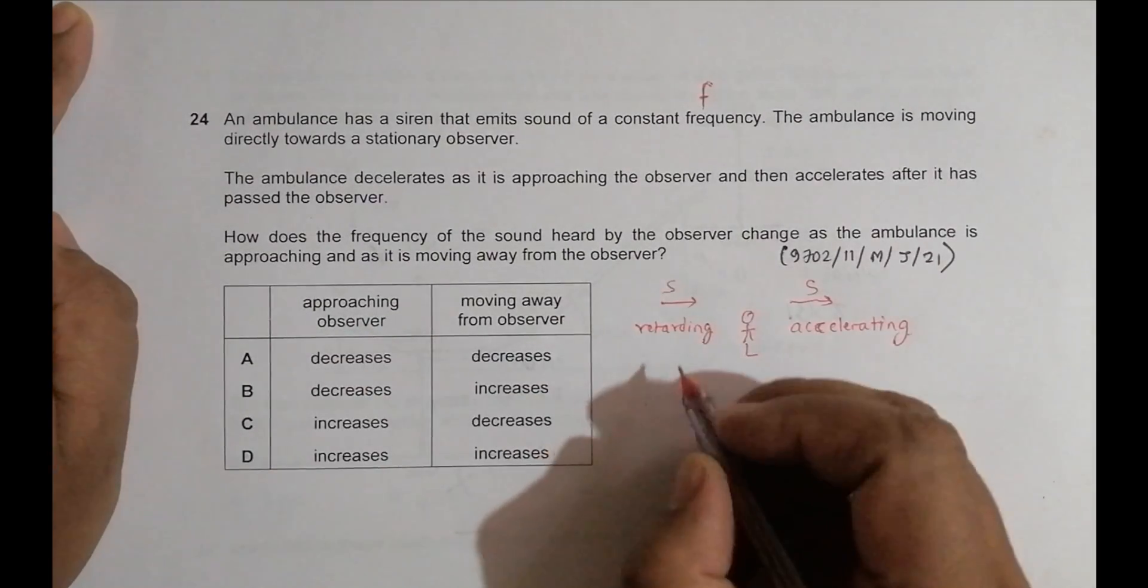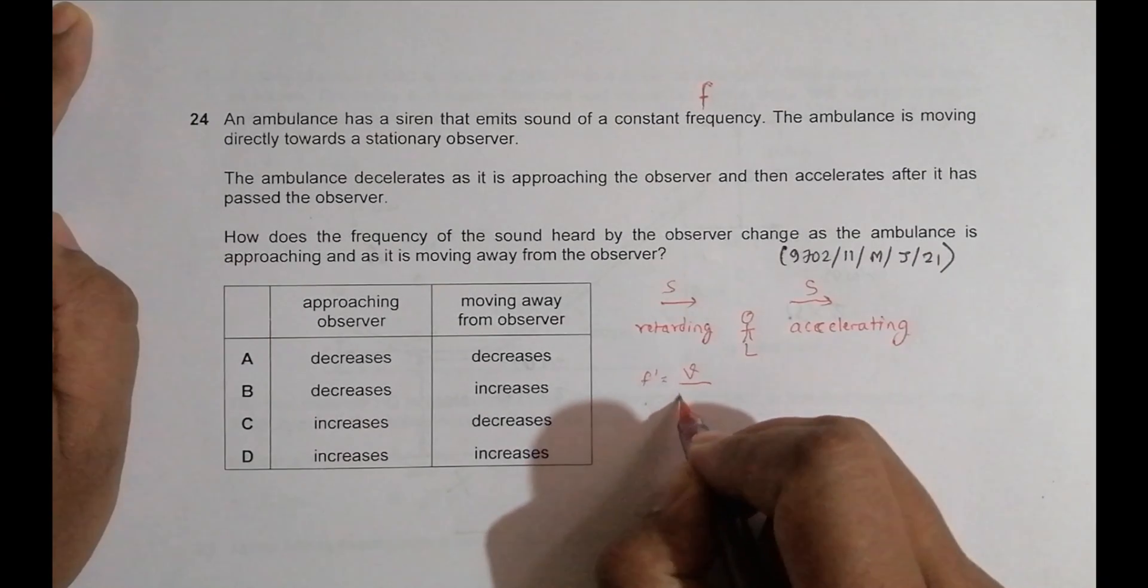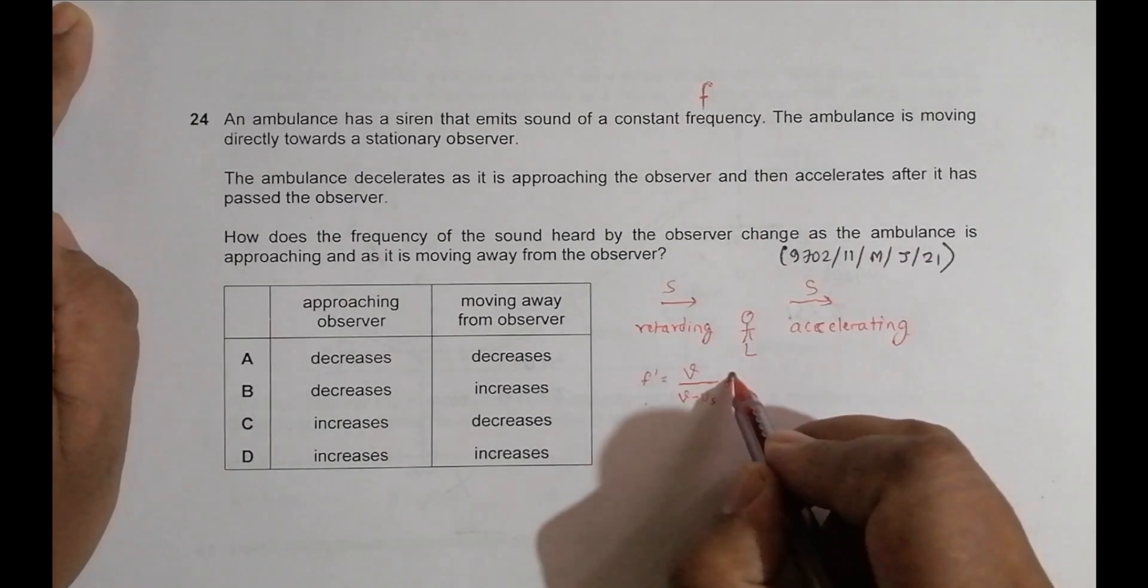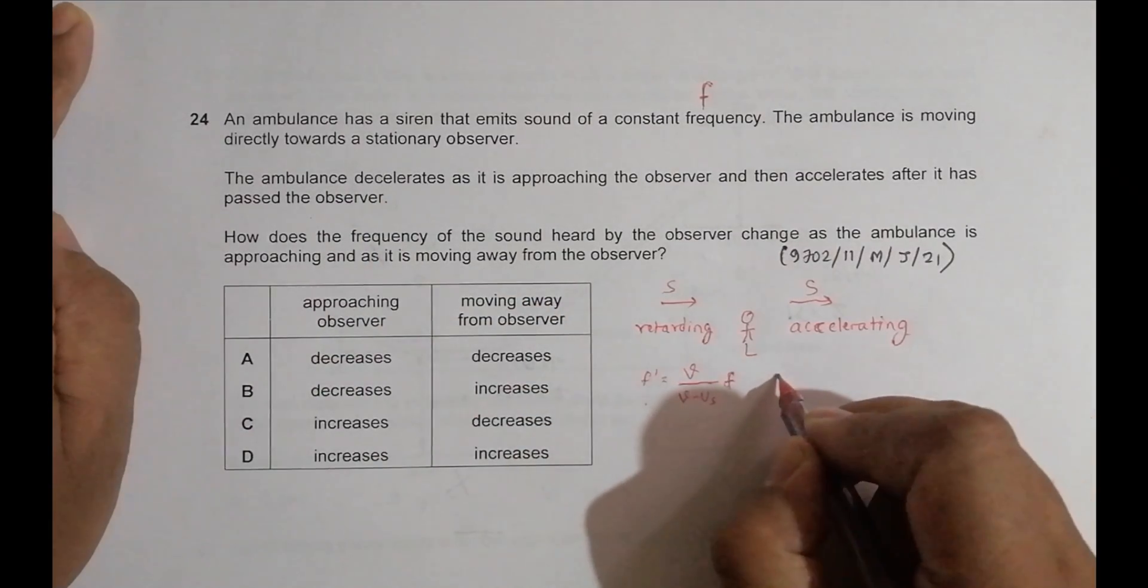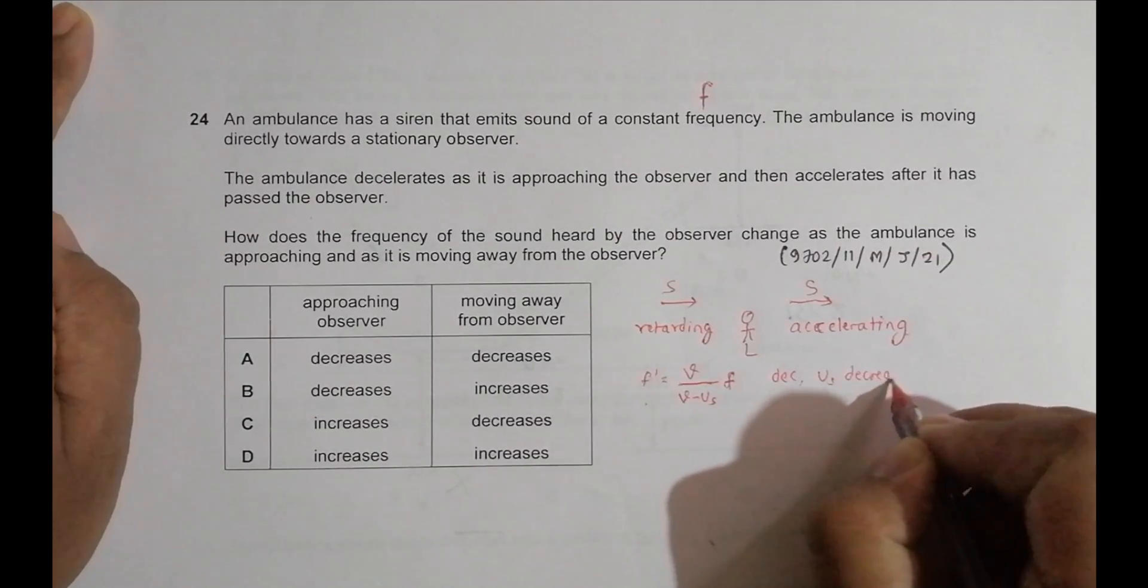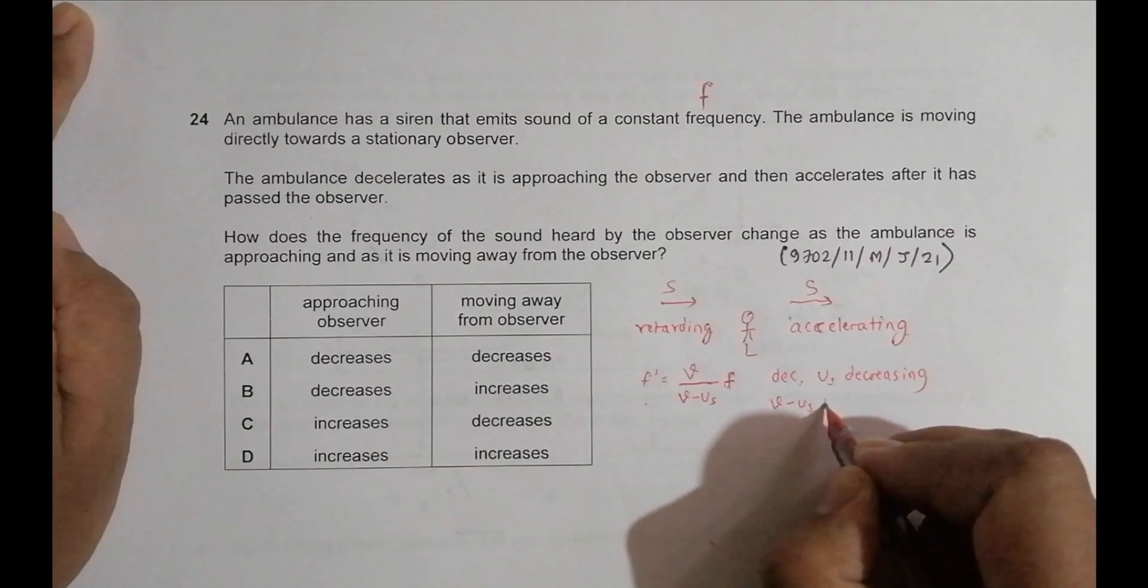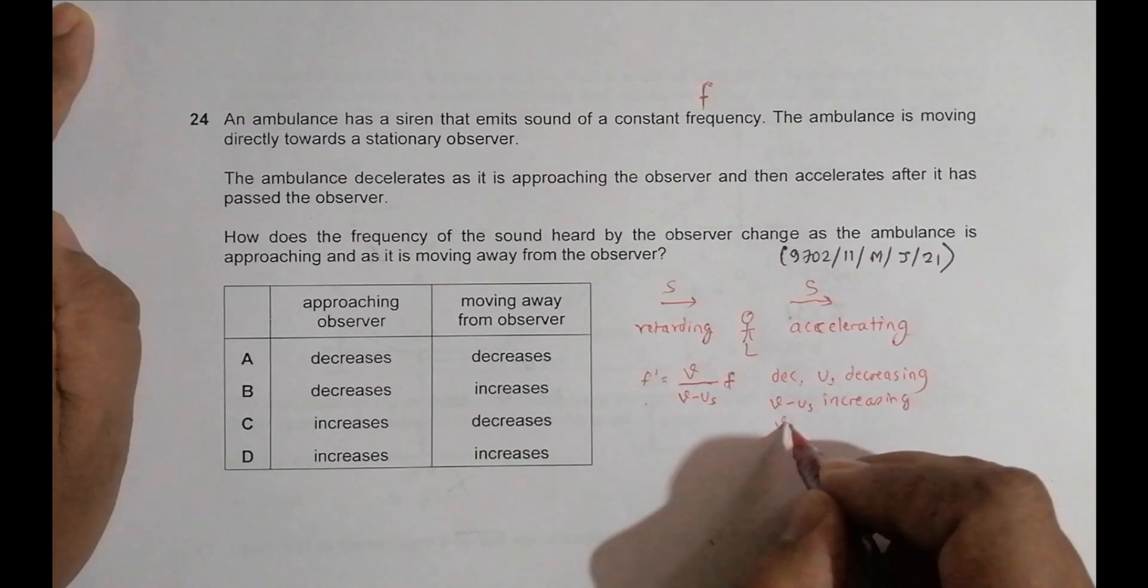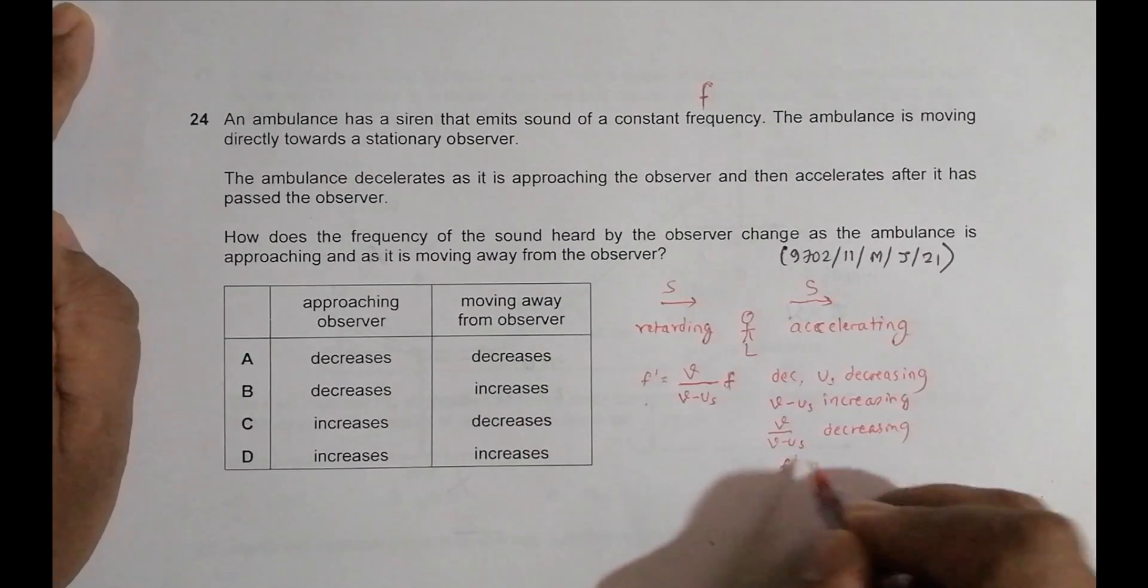So while approaching, the formula is F prime is equal to V is the velocity of sound. Then it is V minus U S. S is the source. Then it is F here. So for approaching, the formula is like this. So now what it says is it is decelerating. So decelerating means that since it is decelerating, U S is decreasing. So U S decrease means that V minus U S will be increasing. So if it increases, then what happens is V by V minus U S should be decreasing, and this causes F prime should be decreasing.